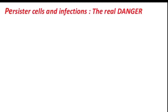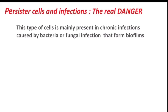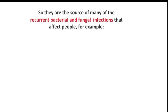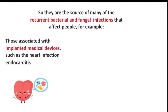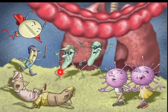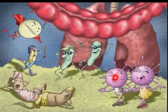Do you think we are overreacting about the danger of persister cells? Unfortunately, no. This type of cell is mainly present in chronic infections caused by bacteria or fungal infections that form biofilms, making them the source of many recurrent bacterial and fungal infections. For example, those associated with implanted medical devices such as endocarditis, and a potentially deadly example is cystic fibrosis-associated lung infections primarily caused by Pseudomonas aeruginosa. Within a biofilm there are different species of bacteria with different susceptibilities — susceptible bacteria, resistant cells, and those dormant persister cells.